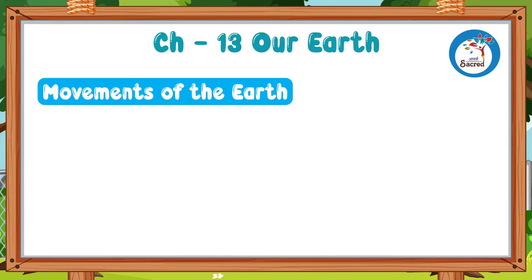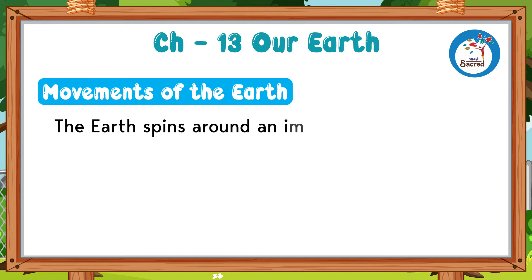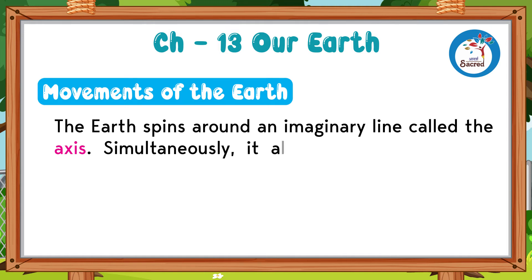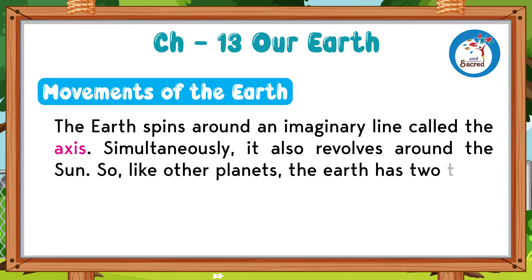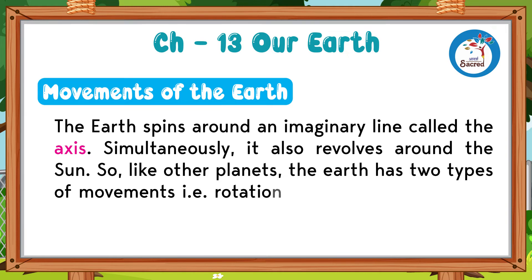Movements of the Earth. The Earth spins around an imaginary line called the Axis. Simultaneously, it also revolves around the Sun. So, like other planets, the Earth has two types of movements: rotation and revolution.